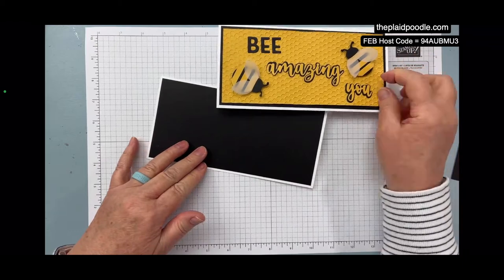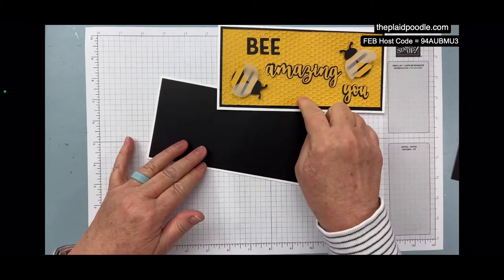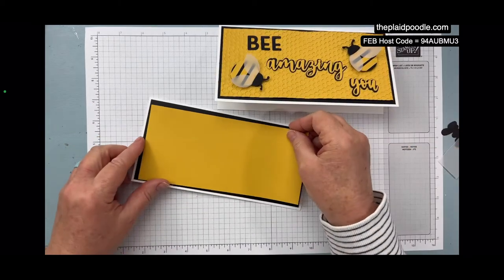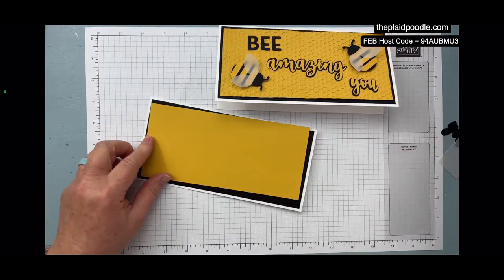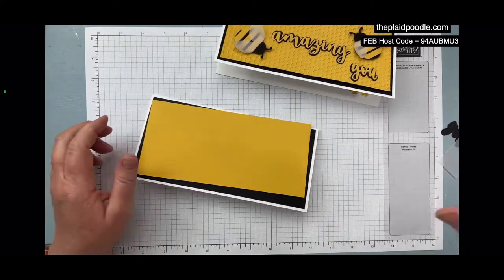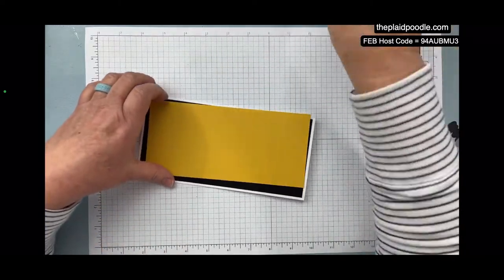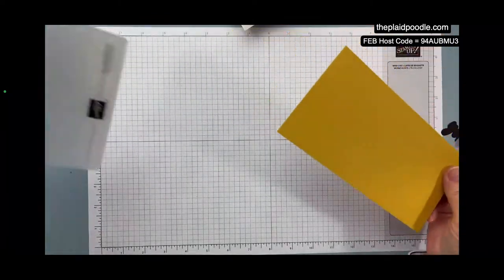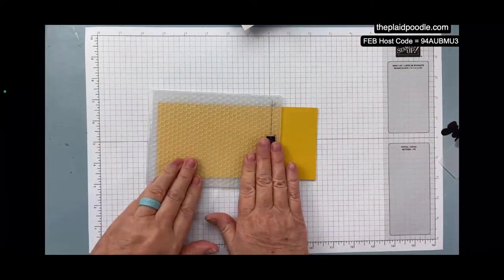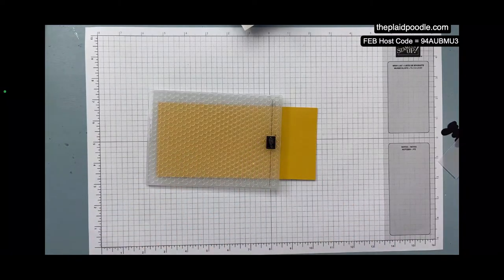And then for our little hive, our embossed layer, I've got a piece of—I think this is 3 1/2 by 7 1/2. Would that be right? Yes, that would be right. I should never second-guess myself. Okay, and I'm going to show you how I did this with a longer piece of cardstock.